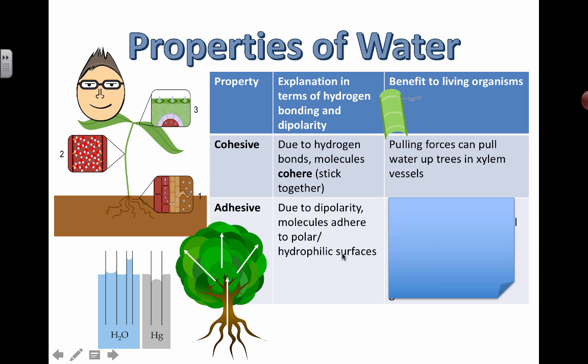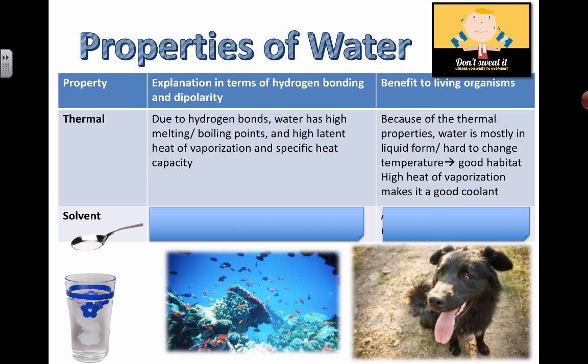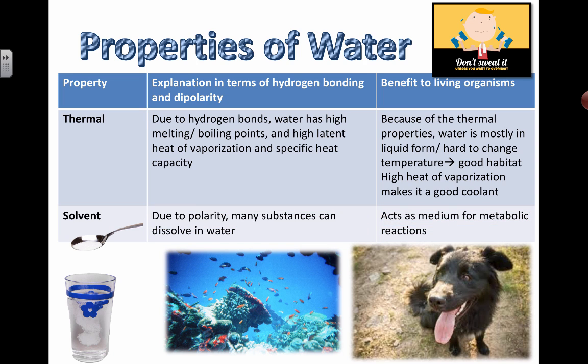So four properties of water: cohesion, adhesion, thermal properties, and solvent properties. You should be able to explain two things for each of these. You should be able to explain the benefit to living organisms, and you should also be able to give an explanation of how this property arises as a result of hydrogen bonding that results from the dipolarity and the polarity of the actual water molecules. I gotta go drink a glass of water.